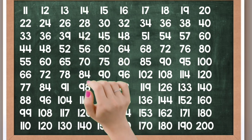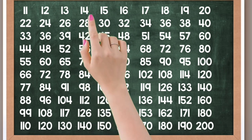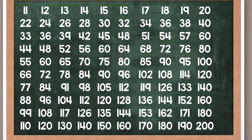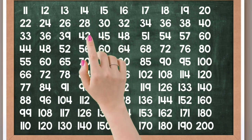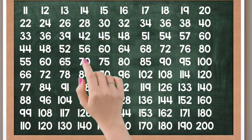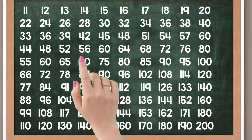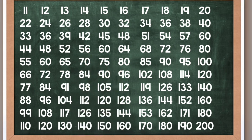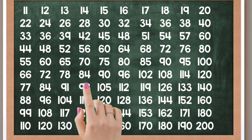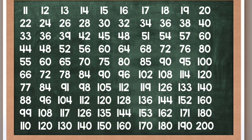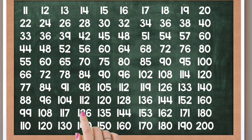14 times 1 is 14, 14 times 2 is 28, 14 times 3 is 42, 14 times 4 is 56, 14 times 5 is 70, 14 times 6 is 84, 14 times 7 is 98, 14 times 8 is 112, 14 times 9 is 126, 14 times 10 is 140.